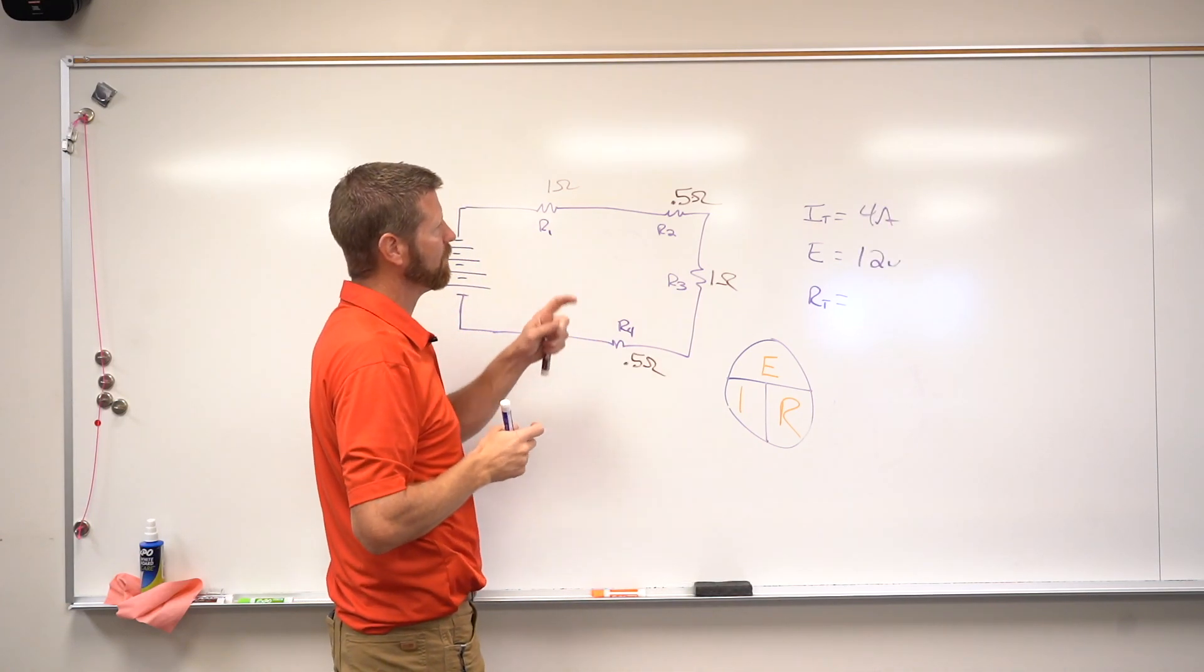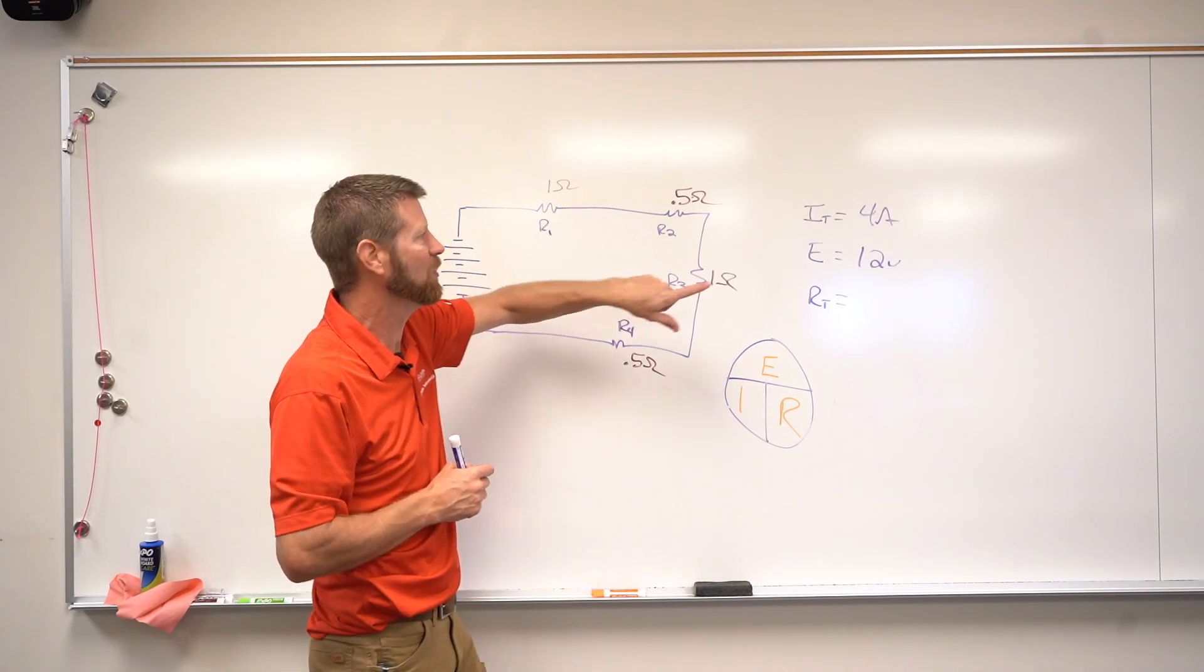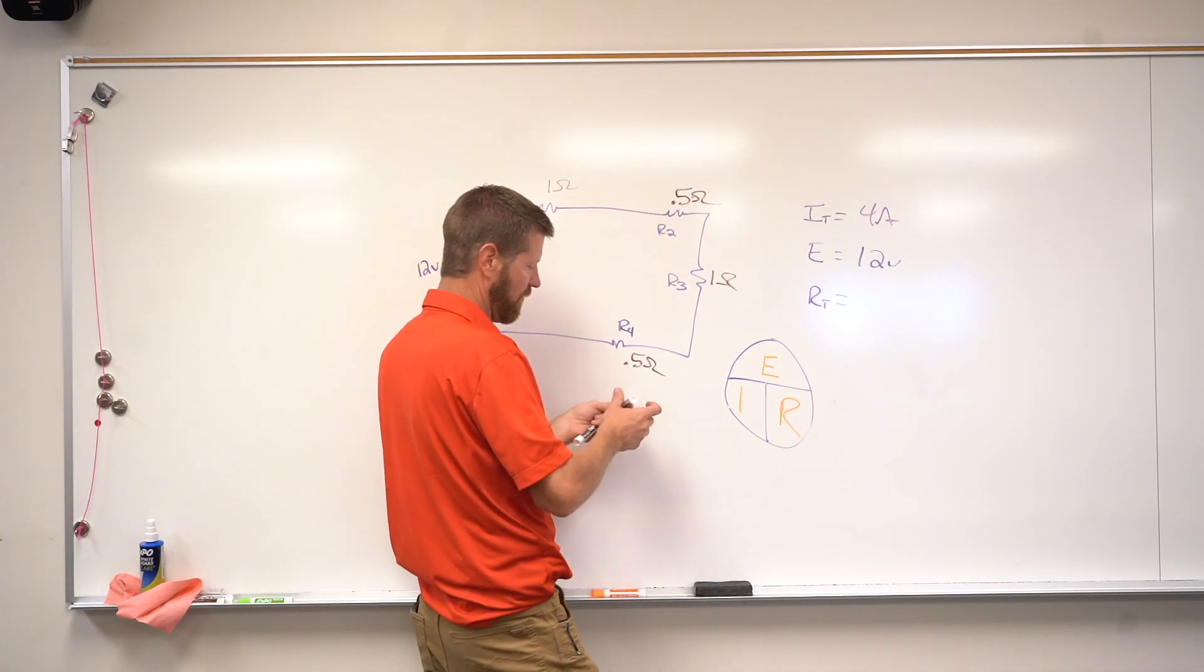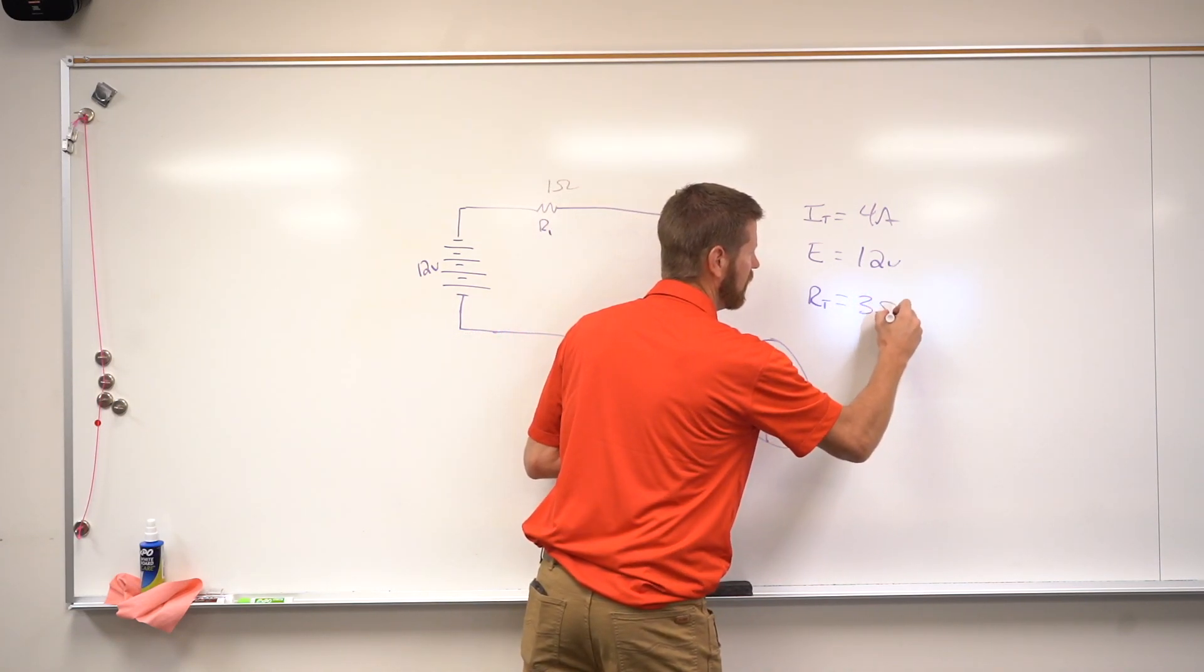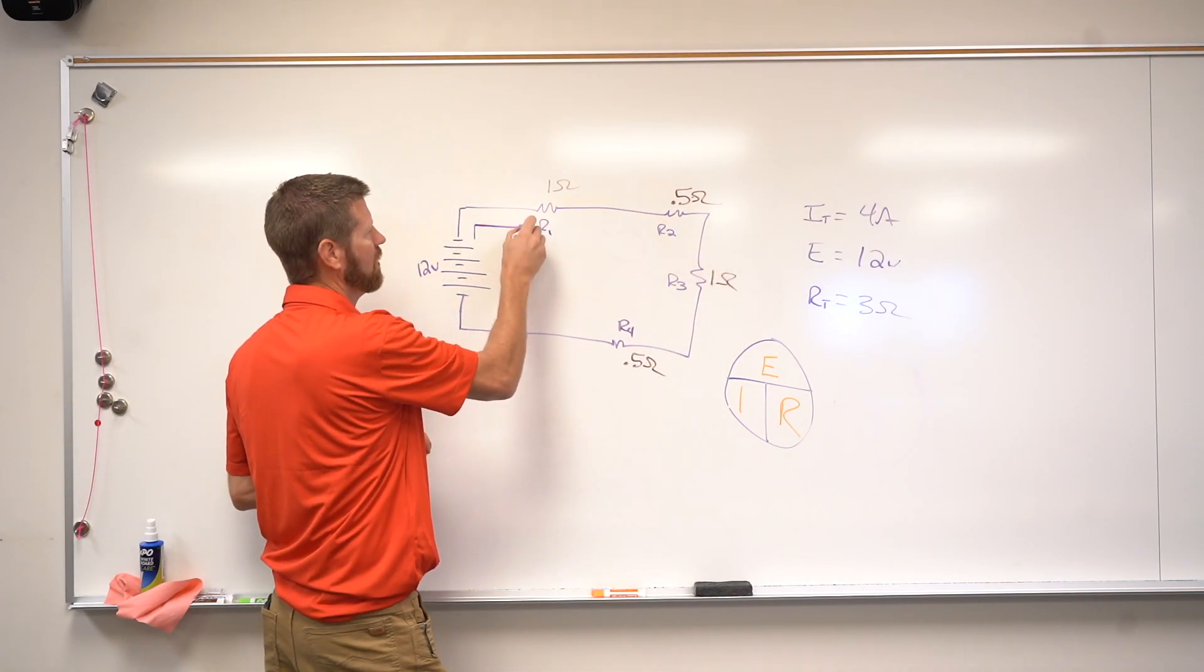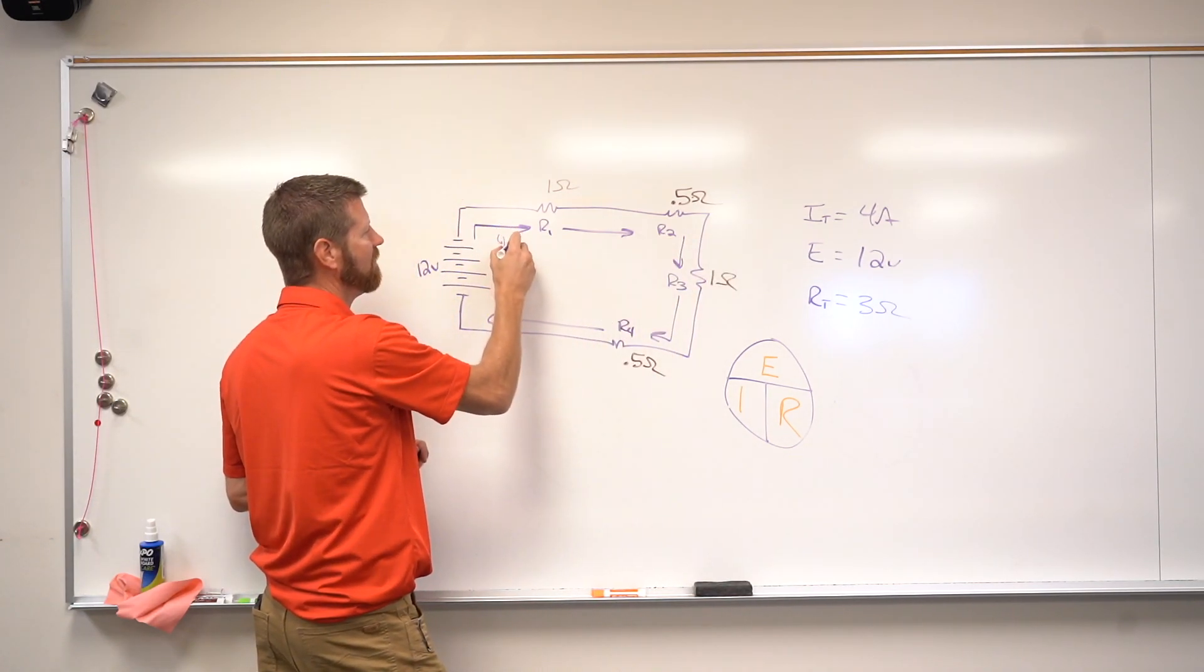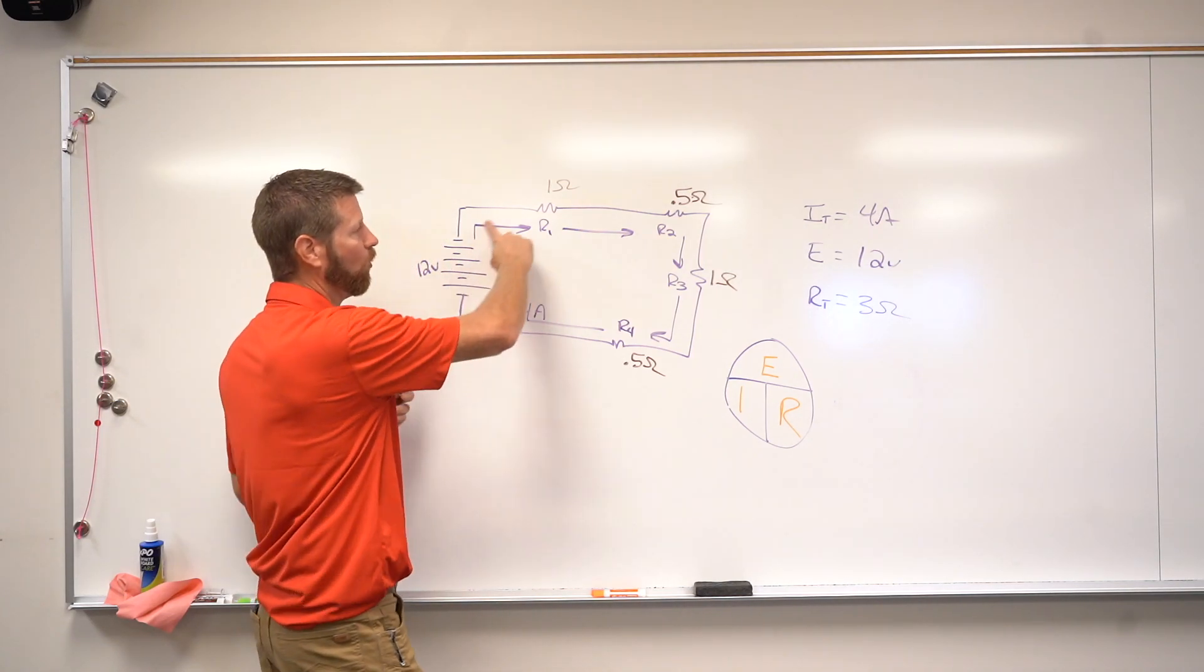So the total amperage is 4. We have 12 volts in the circuit, and if I add up all the resistors, I can do it this way. I can use Ohm's Law using these two numbers, but since the numbers are already provided, we know that we have a total of 3 ohms. So let's plug 3 ohms with how many amps? Remember like we said in the other problem that the amperage is the same throughout the circuit. So if 4 amps leave the battery, 4 amps are going to return to the battery. So 4 amps in the circuit.